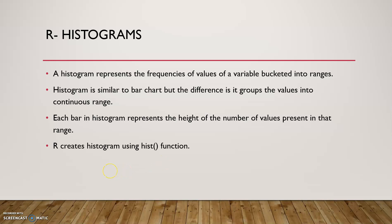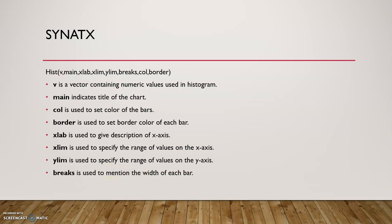R creates histogram using hist function. Syntax of histogram: hist of v. v is a vector containing numeric values used in histogram. main is the title of the chart. col is the color of the bar. border is the border of the chart. xlab is the x-axis.